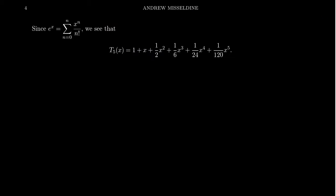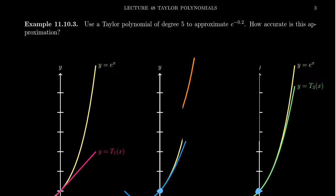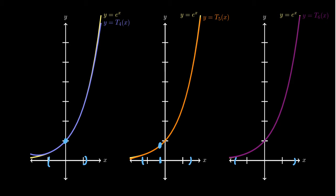Let's get into the details of the calculation. E to the x as a Maclaurin series is the sum from n equals 0 to infinity of x to the n over n factorial. If we take the T5 Taylor polynomial and write it in expanded form, we get the 0th through 5th terms: 1 plus x plus one-half x squared plus one-sixth x cubed plus one over 24 times x to the 4th plus one over 120 times x to the 5th.